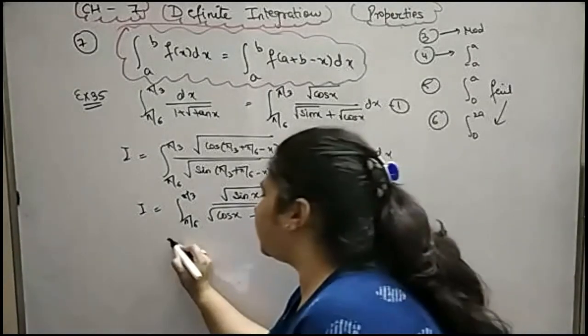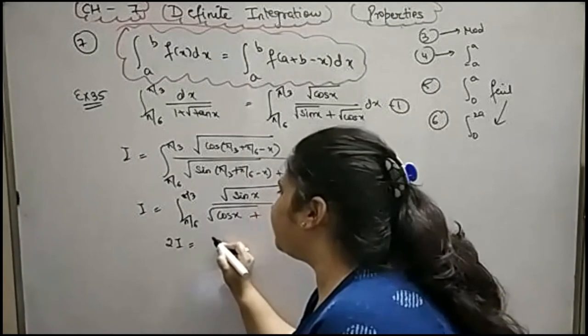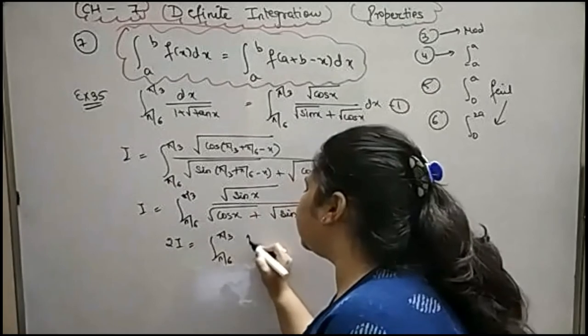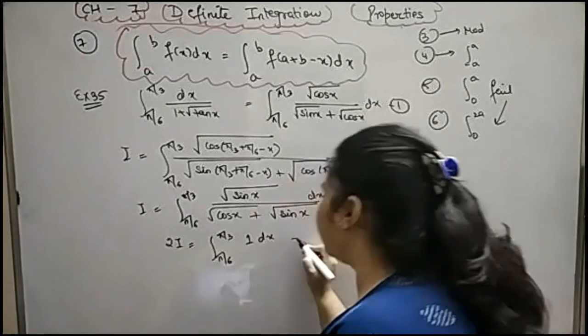And what does the property apply? After doing this, what do we do? We will add both. If we add it, it will cancel out. I have left a few steps.